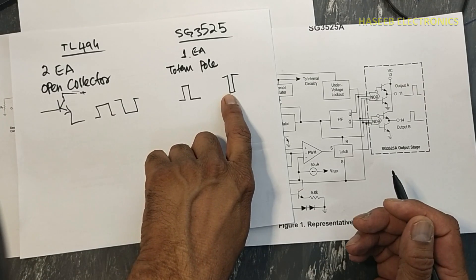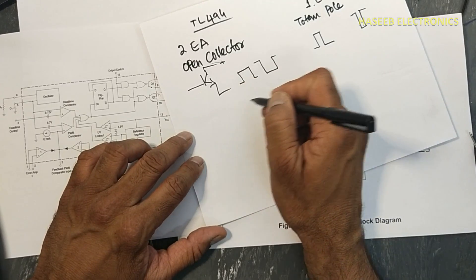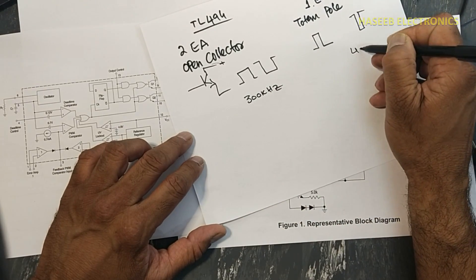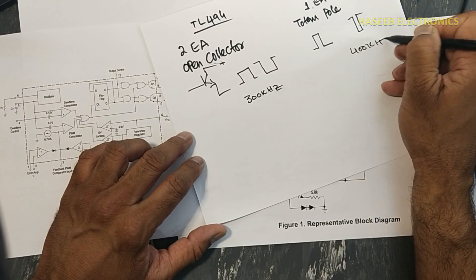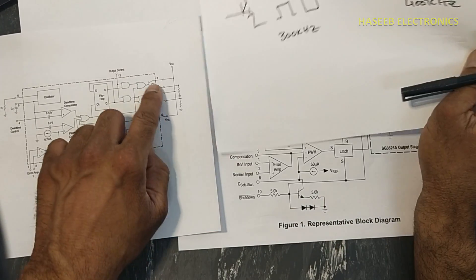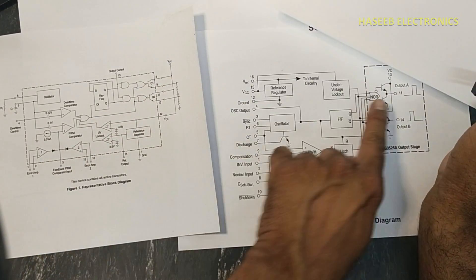Frequency range, it is up to 300 kilohertz, and it is up to 400 kilohertz. 100 hertz to 400, 100 hertz to 300 kilohertz. So output stage is different.